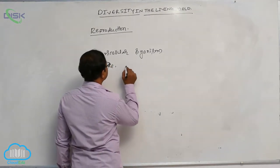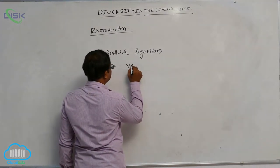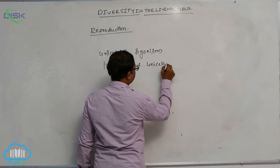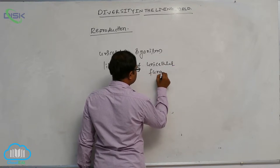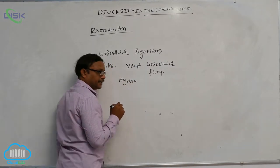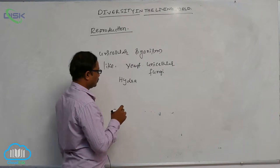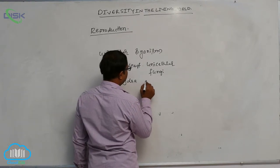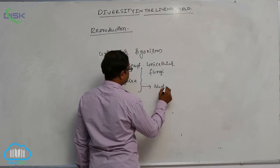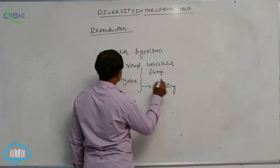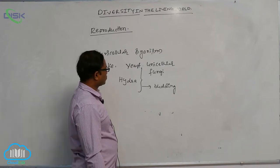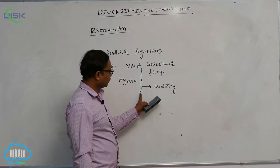Yeast is a unicellular fungi — that is an important bit. Hydra belongs to phylum Cnidaria, or Porifera. Both hydra and yeast show the budding process. This is an objective bit — both are unicellular organisms showing asexual reproduction by the budding process.